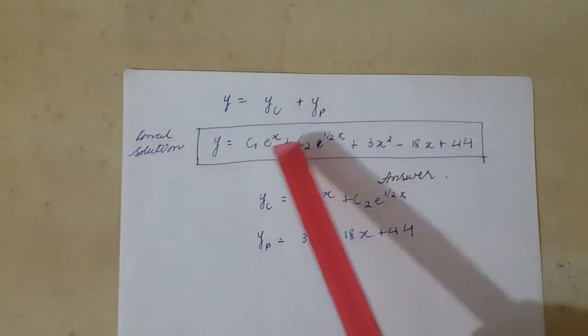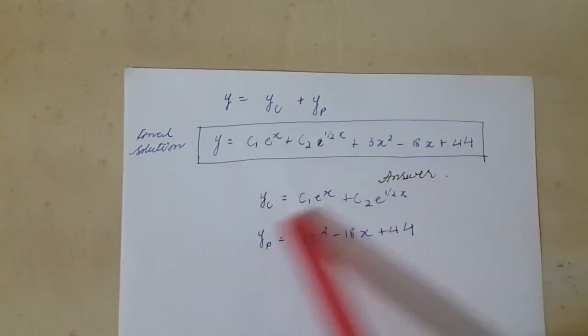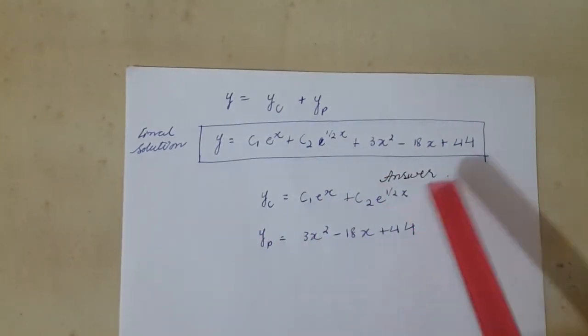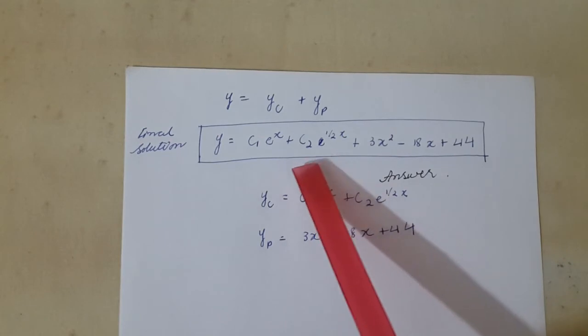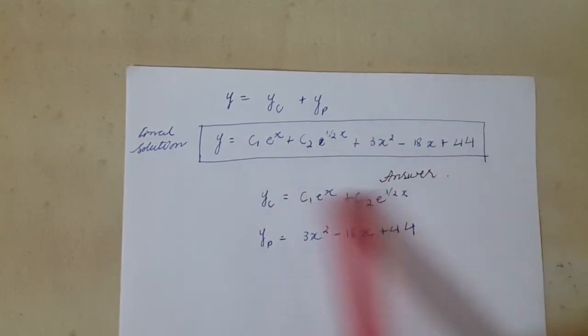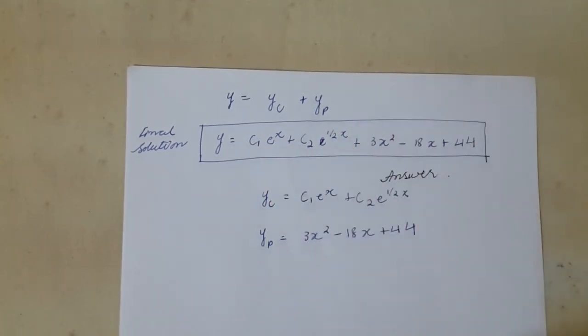Now for final solution, we know that y = yc + yp. We know the value of yc, we know the value of yp. I simply substitute in this equation and I got my final solution.